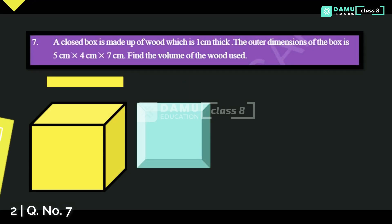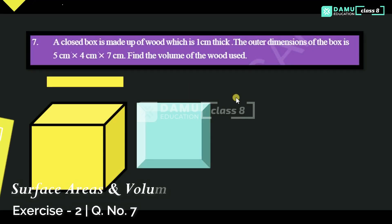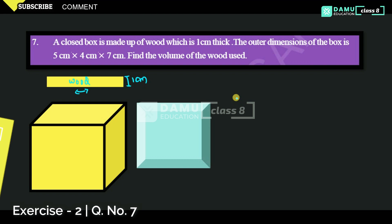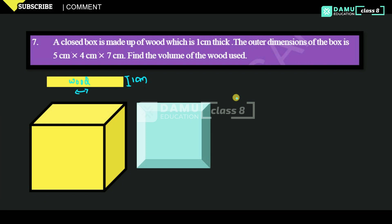Hello viewers, thanks for watching our videos. If you want to subscribe, please subscribe and click the bell icon. In this module, we're going to discuss a problem: a closed box is made up of wood which is 1 centimeter thick. The outer dimensions of the box are 5 centimeters, 4 centimeters, and 7 centimeters. Find the volume of the wood used.